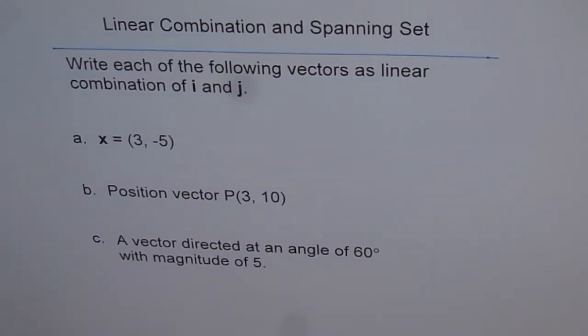Linear Combination and Spanning Set. Write each of the following vectors as linear combination of i and j. So we have three parts to this question.